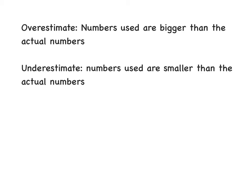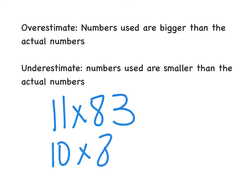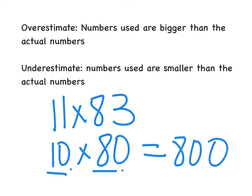So let's say I had something like 11 times 83. I would probably change 11 to 10, and 83 to 80. So my estimate, 8 times 1 is 8, with two zeros at the end. My estimate is 800. So now I'm going to go back at the end of estimating and see if it's an overestimate or an underestimate. From 11 to 10, I went down. From 83 to 80, I went down. So both the numbers that I used are smaller than the actual numbers. So this is an underestimate.